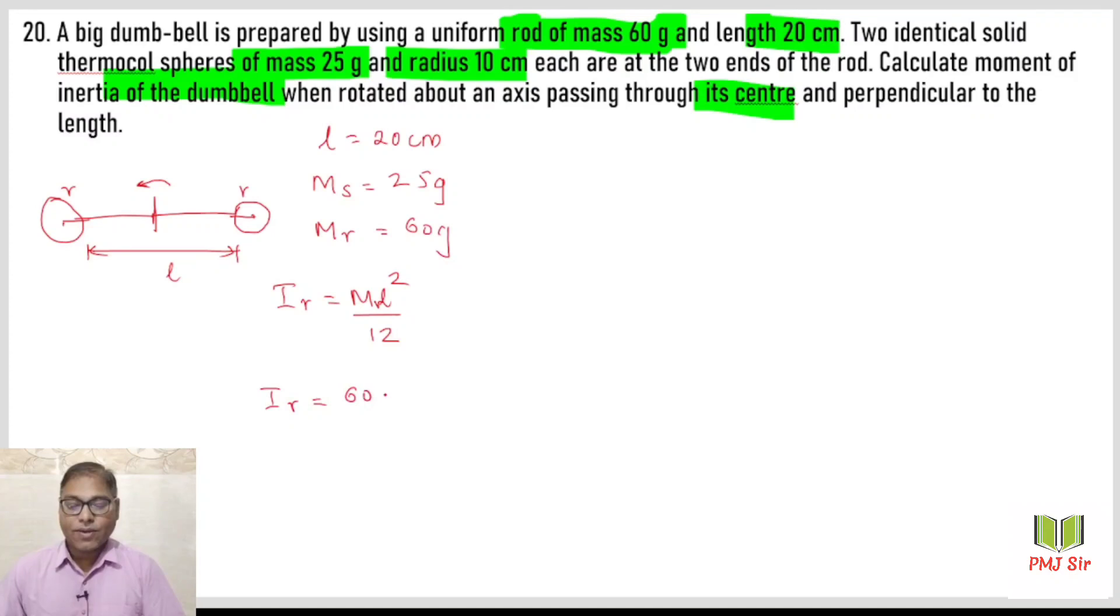Mass of the rod is 60, length is 20 centimeters, so it is 60 times 20 times 20 divided by 12. Simplifying: 60 into 20 is 100, 100 into 20 is 2000, divided by 12 gives 2000 gram centimeter square. So we have the rod's moment of inertia.